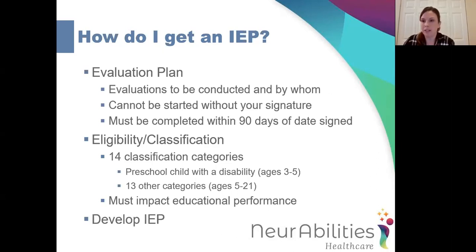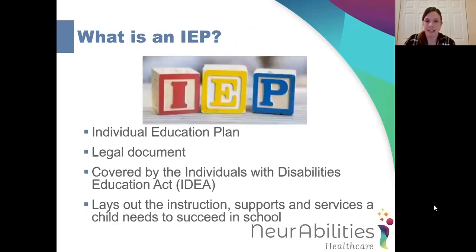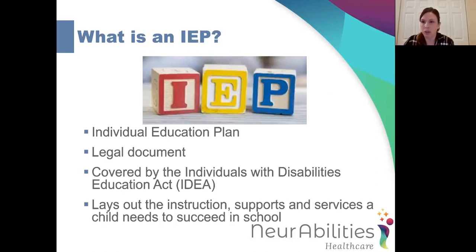Once the child is classified and found eligible, you will develop the IEP. Sometimes it's done right at that same meeting; other times, depending on how long the meeting has gone, they may re-meet to write the IEP. An IEP is a legal document — many pages long with a lot of legalese. It's covered by federal law, specifically the Individuals with Disabilities Education Act, or IDEA. The point of an IEP is to lay out the instruction, supports, and services that your child needs to succeed in school, and this legal document says that your child will receive these services.